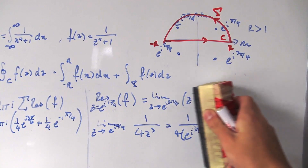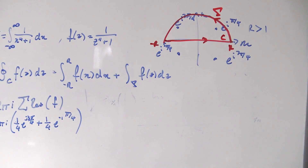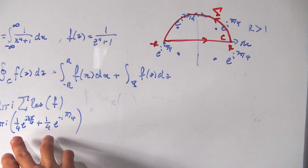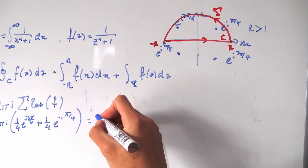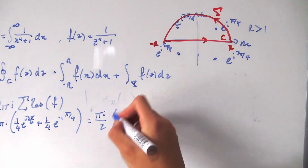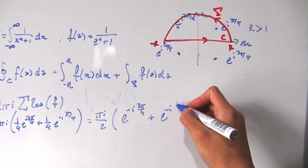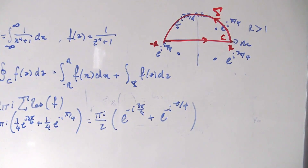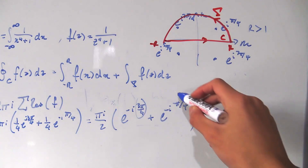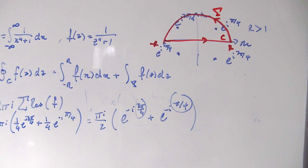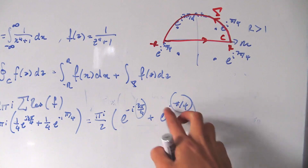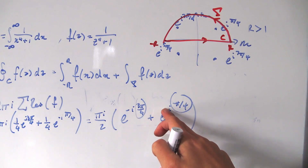Factoring out the 1/4, we have πi/2 times [e to the negative i3π/4 plus e to the negative iπ/4]. This almost looks like a complex sine or cosine, but the arguments need adjusting. Looking at the unit circle, negative π/4 and 3π/4 are reflections; if we multiply the second term by e to the iπ and divide by e to the iπ, we can align the arguments.